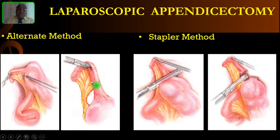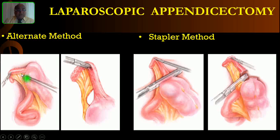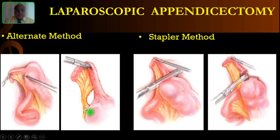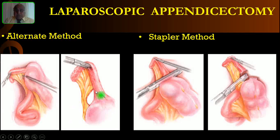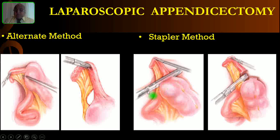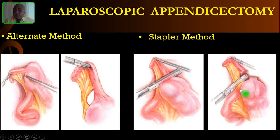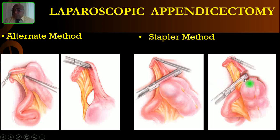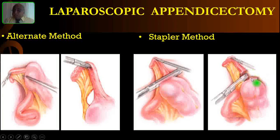There is an alternate method: instead of endo-loops, you can use a stapler. For this, after identifying the appendix, create a window in the meso-appendix and introduce the GIA laparoscopic endo-stapler through this window. Just staple and the appendix is cut — you can see the staple line. Within seconds you can do this procedure. Then reapply the stapler over the meso-appendix. You have to cut the appendix and meso-appendix separately — don't cut both together.